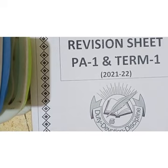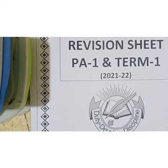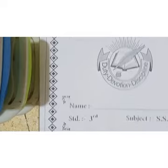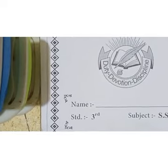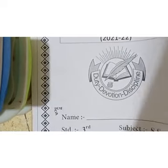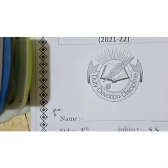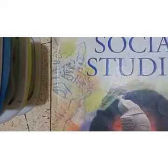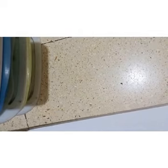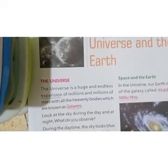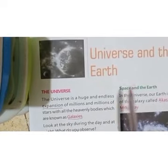First we will start our revision with the first chapter. I hope you all got your PDF — please take a printout. Our first chapter name is Universe and the Earth.